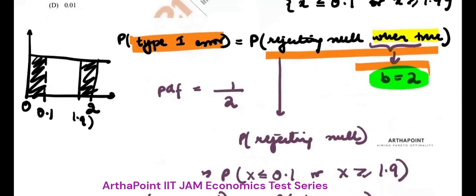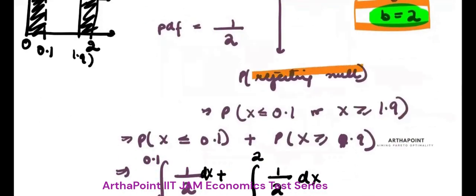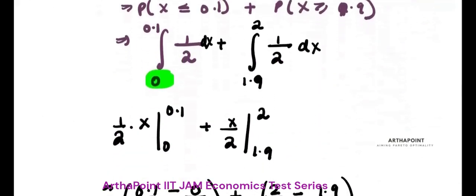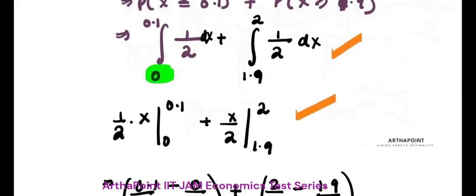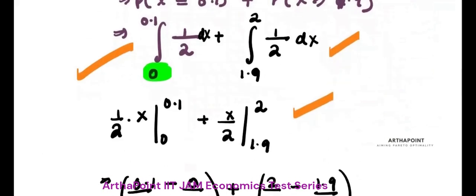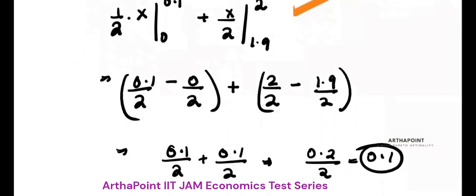Because null is true, the value of B is 2. Because you are rejecting null which means that either X is less than 0.1 or greater than 1.9, and then you simply go ahead and find these probabilities. You should know how to find the probability by probability density function and then you will go ahead and get the answer.